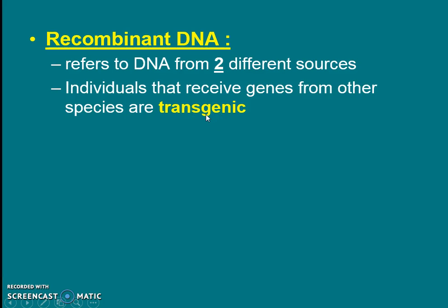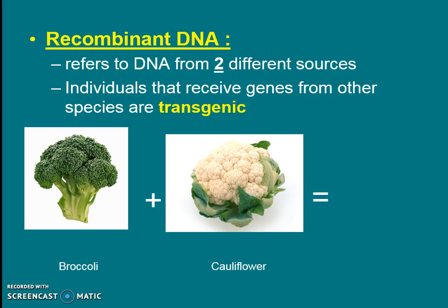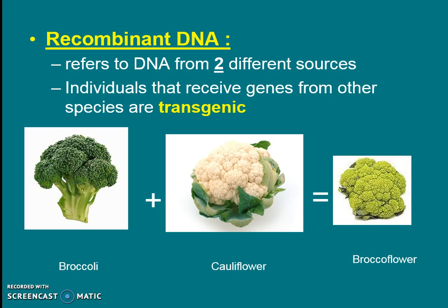The bacteria with the insulin gene is also transgenic. We do this sometimes as scientists just to experiment, like our glowing mice, but oftentimes it's done for medical reasons. Sometimes it's also done to explore new types of food. For instance, scientists have taken genes from broccoli and genes from cauliflower and made almost a hybrid — a transgenic organism through biotechnology called broccoflower — that has some of the qualities and proteins of both species.